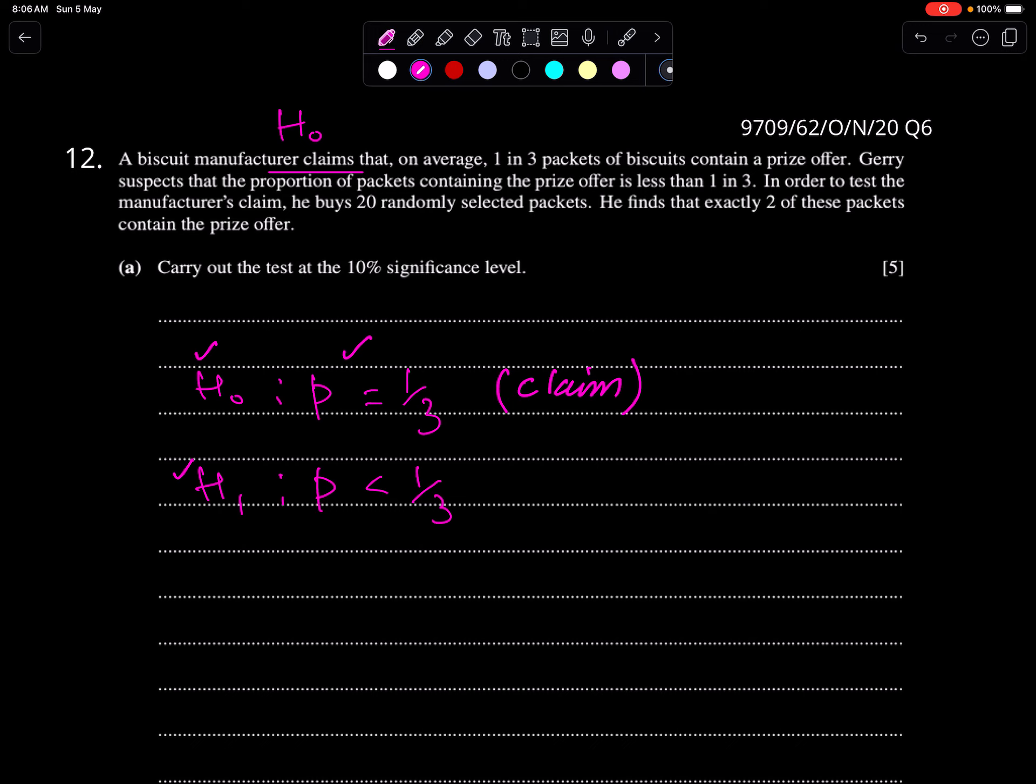Don't worry about these terms. We will discuss these terms later in this lecture, inshallah. In order to test the manufacturer's claim, he buys 20 randomly selected packets - this is n of binomial. And this is the test value. Carry out the test at 10% significance level.